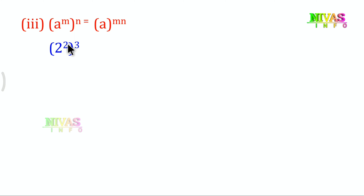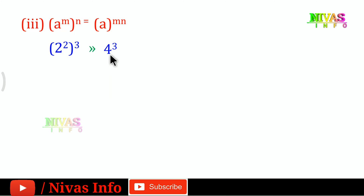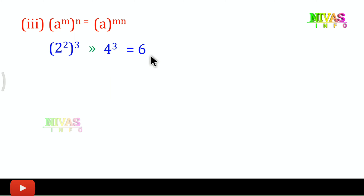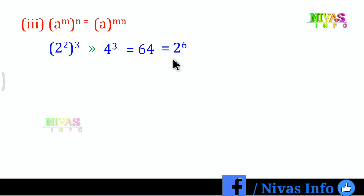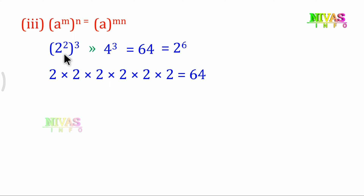For example, 2 power of 2, whole power of 3. There is an exponent inside the bracket and an exponent outside. First, 2^2 is 4, so we get 4 power of 3. Then 4^3 is 4 into 4 into 4, which equals 64. Alternatively, using the law: 2^(2×3) = 2^6 = 64. Both give the same value, confirming the law.